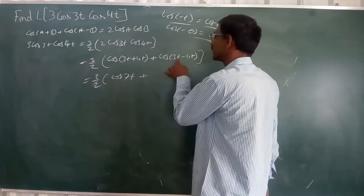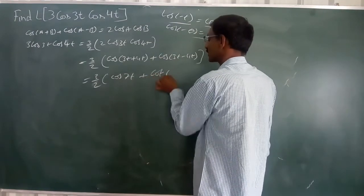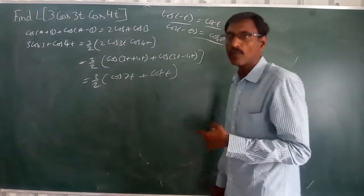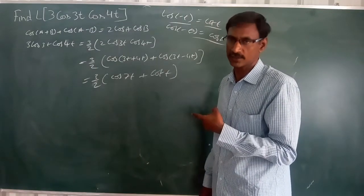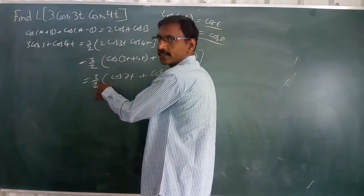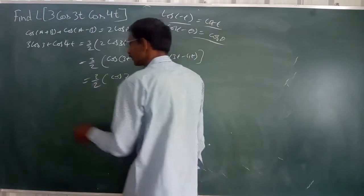So, now I would like to write this. 3 by 2, cos 7 theta. Now, I would like to apply it. Cos 7 theta plus cos theta. This is the constant. Keep the side constant.